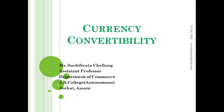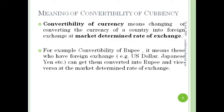In this tutorial, you are going to learn about currency convertibility — what is current account convertibility and what is capital account convertibility. Convertibility of currency means changing or converting the currency of a country into foreign currency at a market-determined rate of exchange. The market-determined rate means the rate determined by demand and supply of foreign currencies, with no government intervention. Convertibility of rupee means those who have foreign exchange — for example, US dollar or Japanese yen — can get them converted into rupee and vice versa at the market-determined rate.